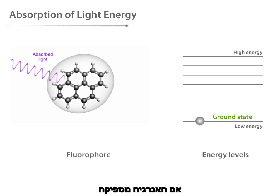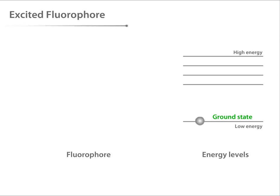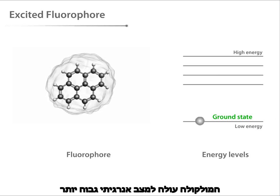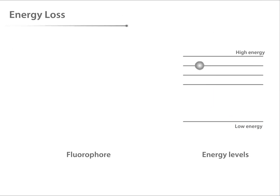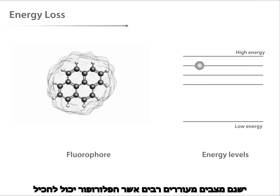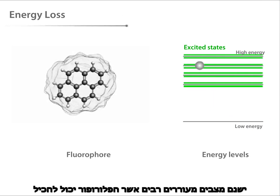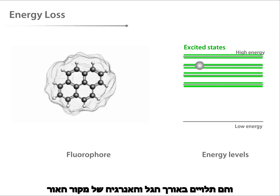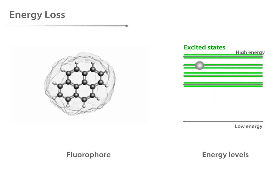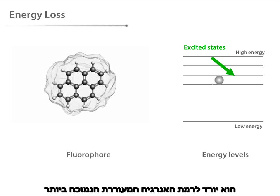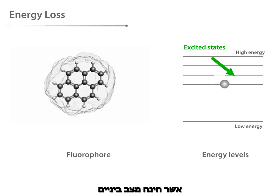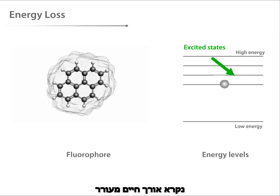If the energy absorbed is sufficient, the molecule reaches a higher energy state called an excited state. This process is known as excitation. There are multiple excited states or energy levels that the fluorophore can attain, depending on the wavelength and energy of the external light source. Since the fluorophore is unstable at high energy configurations, it eventually adopts the lowest energy excited state, which is semi-stable.